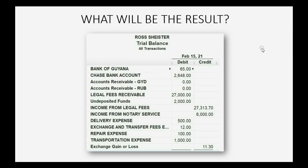When we record this home currency adjustment on March 1st, the value of the Bank of Guiana increases from 65 US dollars to 80 US dollars because of the 15-dollar gain from the increased rate per unit. The exchange gain or loss account will increase by 15 dollars, and we now have a total gain of 26 dollars and 30 cents.